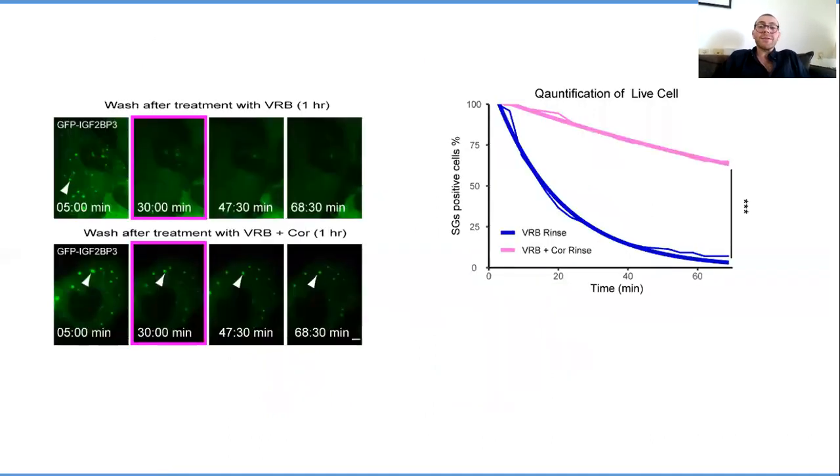One of the ways we looked at this was rinsing out the treatments. When you rinse away the treatment, the stress granules are supposed to dissolve, and the cell is meant to return to function as normal. And we saw this when we treated with VRB and rinsed it out. After about 30 minutes, we saw these stress granules disappear, and that's how it stayed through the rest of the treatment.